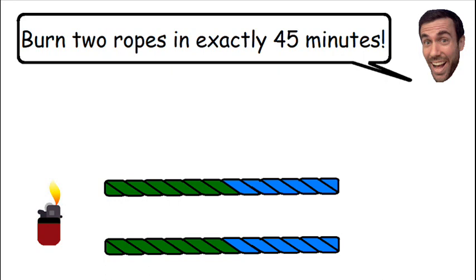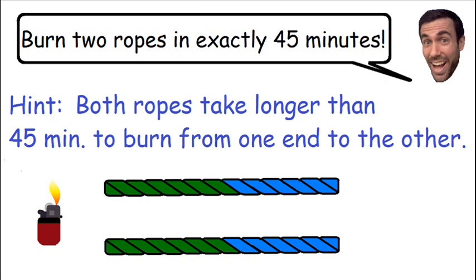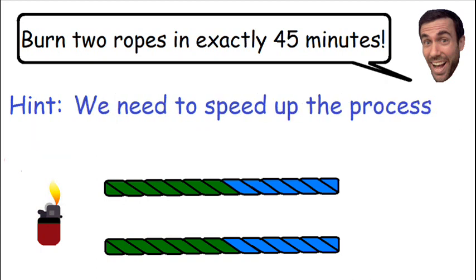I'll start by giving you a hint before I give you the full solution. Both ropes take longer than 45 minutes to burn from one end to the other. So if you want to measure 45 minutes, we need to speed up the process somehow.